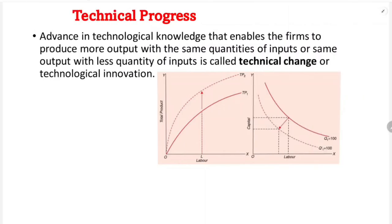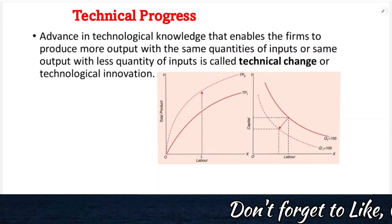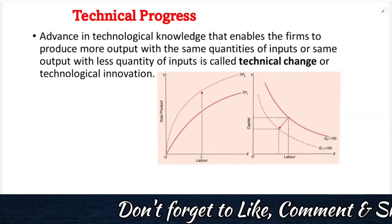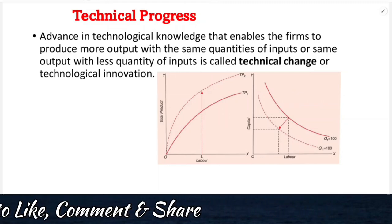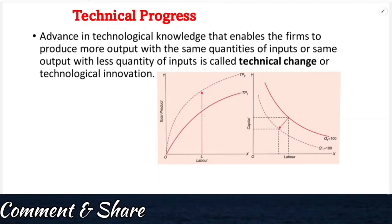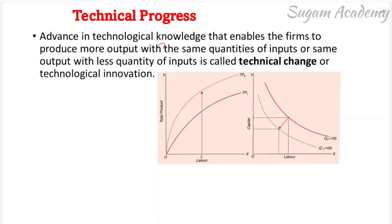Hello everyone. In this class we are going to discuss about technical progress and different types of technical progress. It is from microeconomics, for plus three first and third semesters. So let's begin the class. What is technical progress? Progress in technology is called technical progress — it is the improvement in technology.